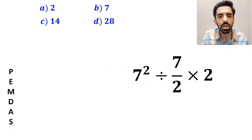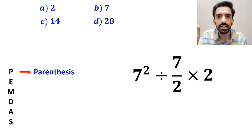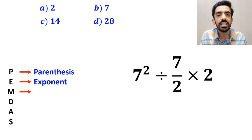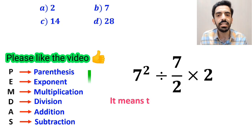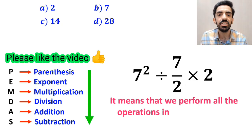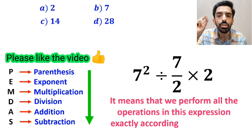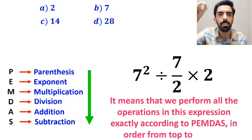In this rule, P stands for parentheses, E stands for exponent, M stands for multiplication, D stands for division, A stands for addition, and S stands for subtraction. It means that we perform all the operations in this expression exactly according to the PEMDAS rule, in order from top to bottom.